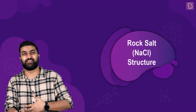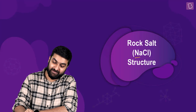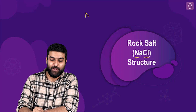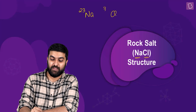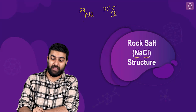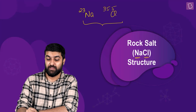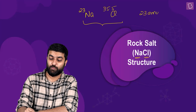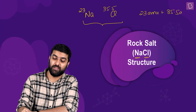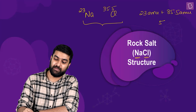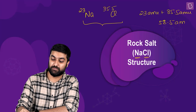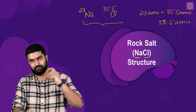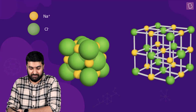The structure we are talking about is NaCl. The mass number of sodium is 23, and the mass number of chlorine is 35.5. So the mass of one formula unit turns out to be 23 amu + 35.5 amu, which is a total of 58.5 amu. Similarly, the molar mass turns out to be 58.5 grams.